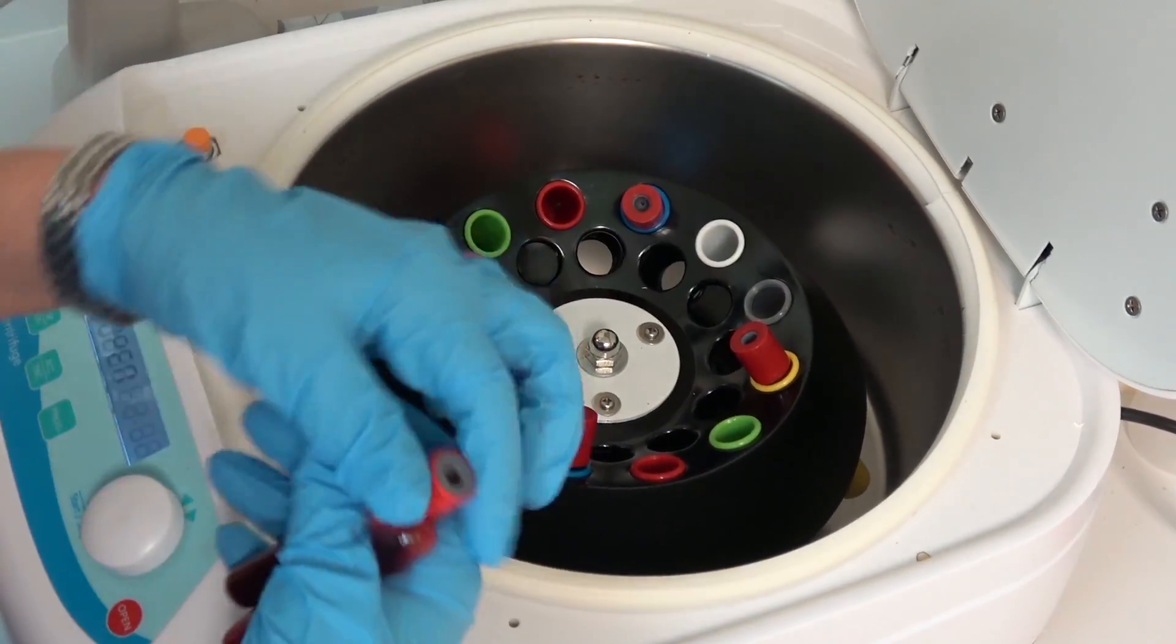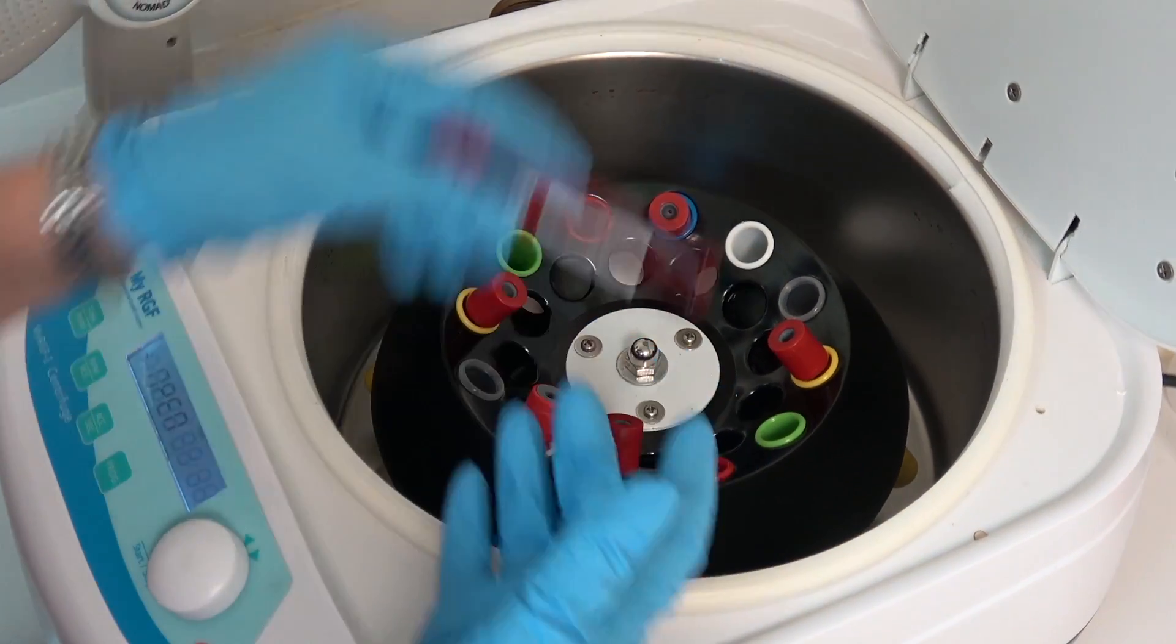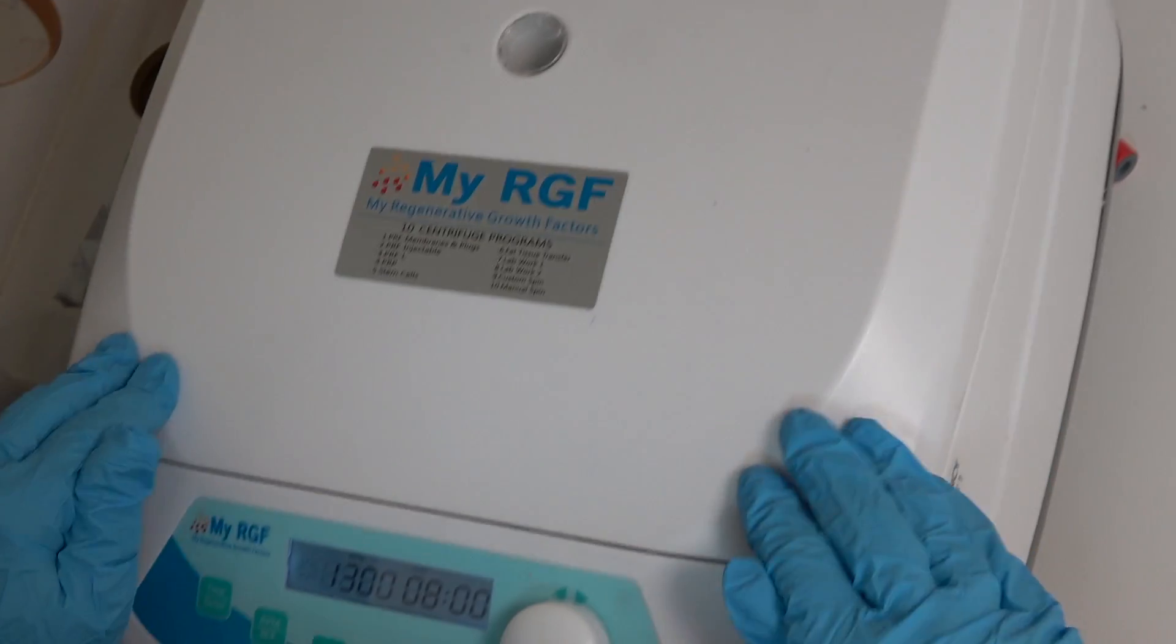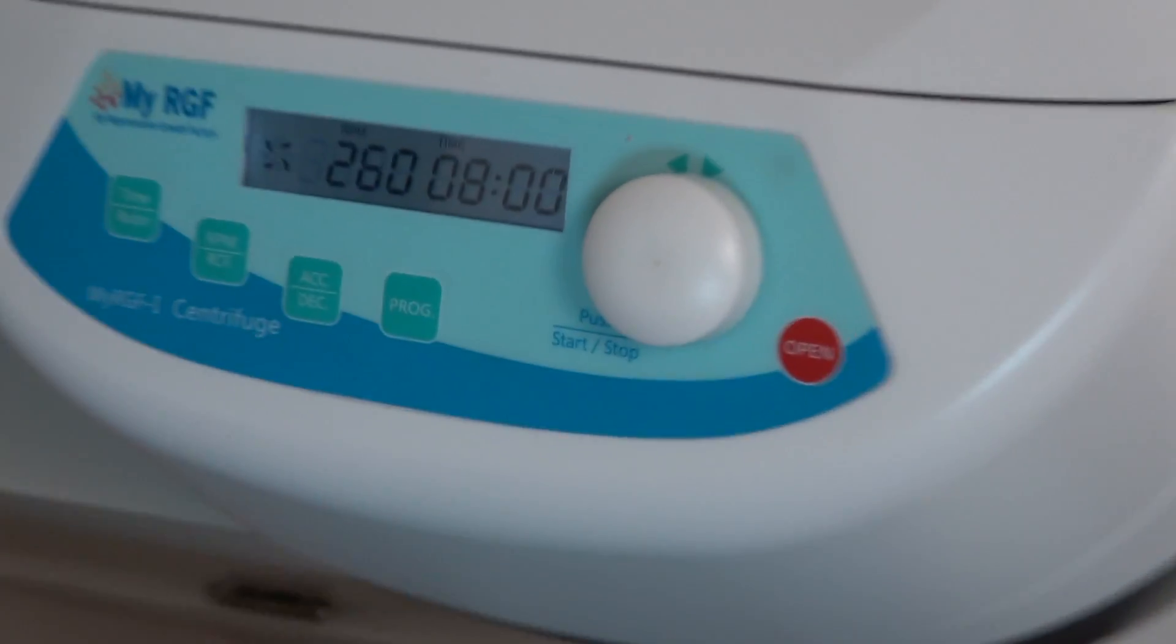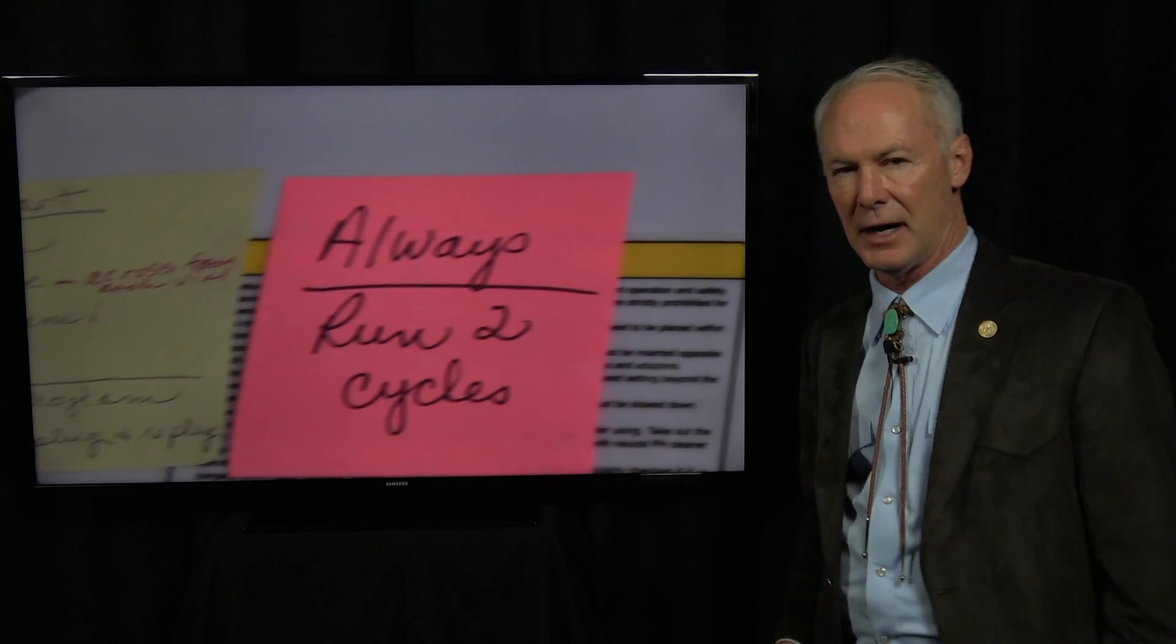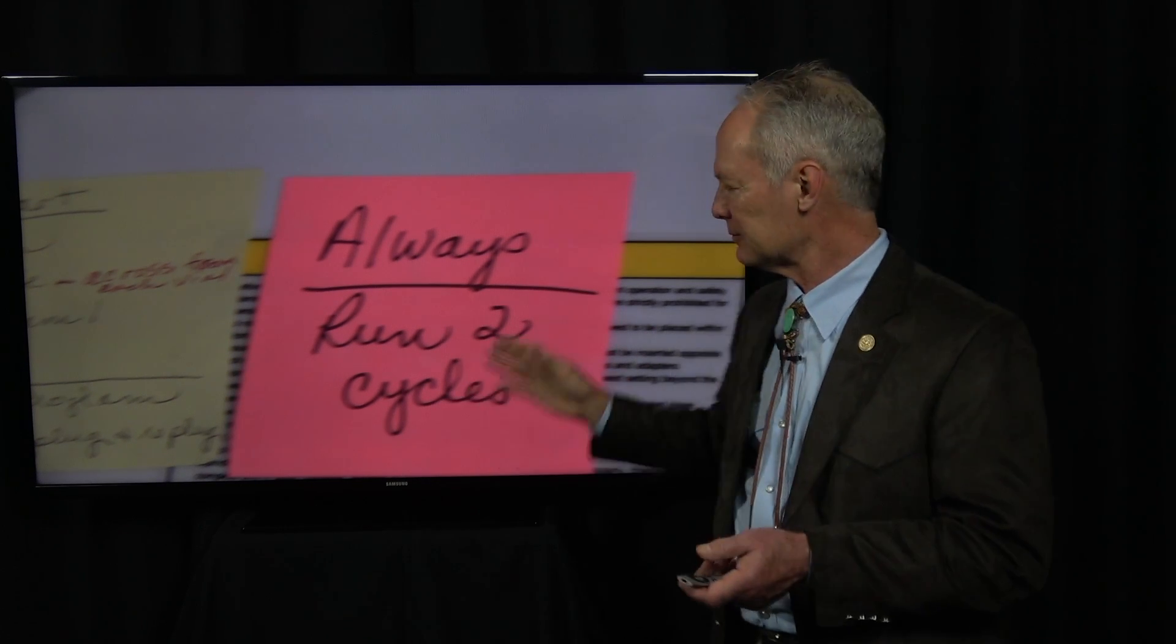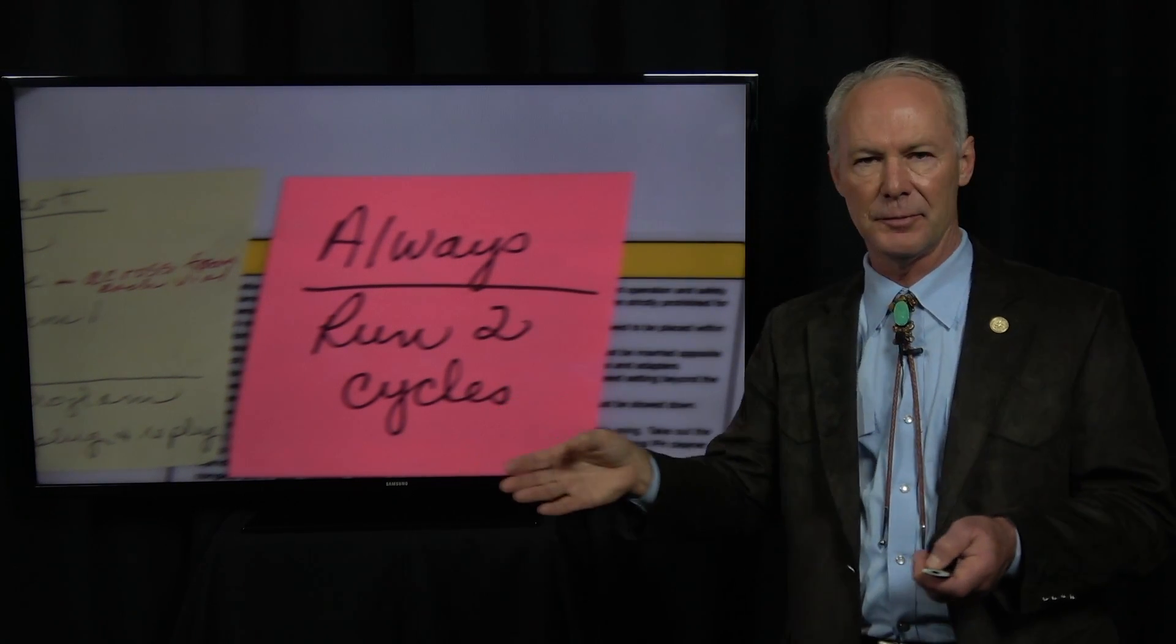And we're going to centrifuge these. We're going to spin these for eight minutes. Now, we always do a double spin of 16 minutes, because it seems like the PRF is not completely formed most of the time after eight minutes. So we run two cycles, and the way you do this so you don't have to wait on it,